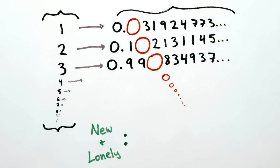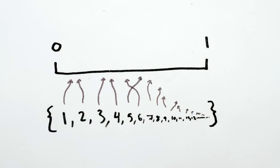What's more, we can find an extra lonely number like this no matter what other numbers we picked, which means we can never draw lines from the integers to all of the numbers between zero and one.